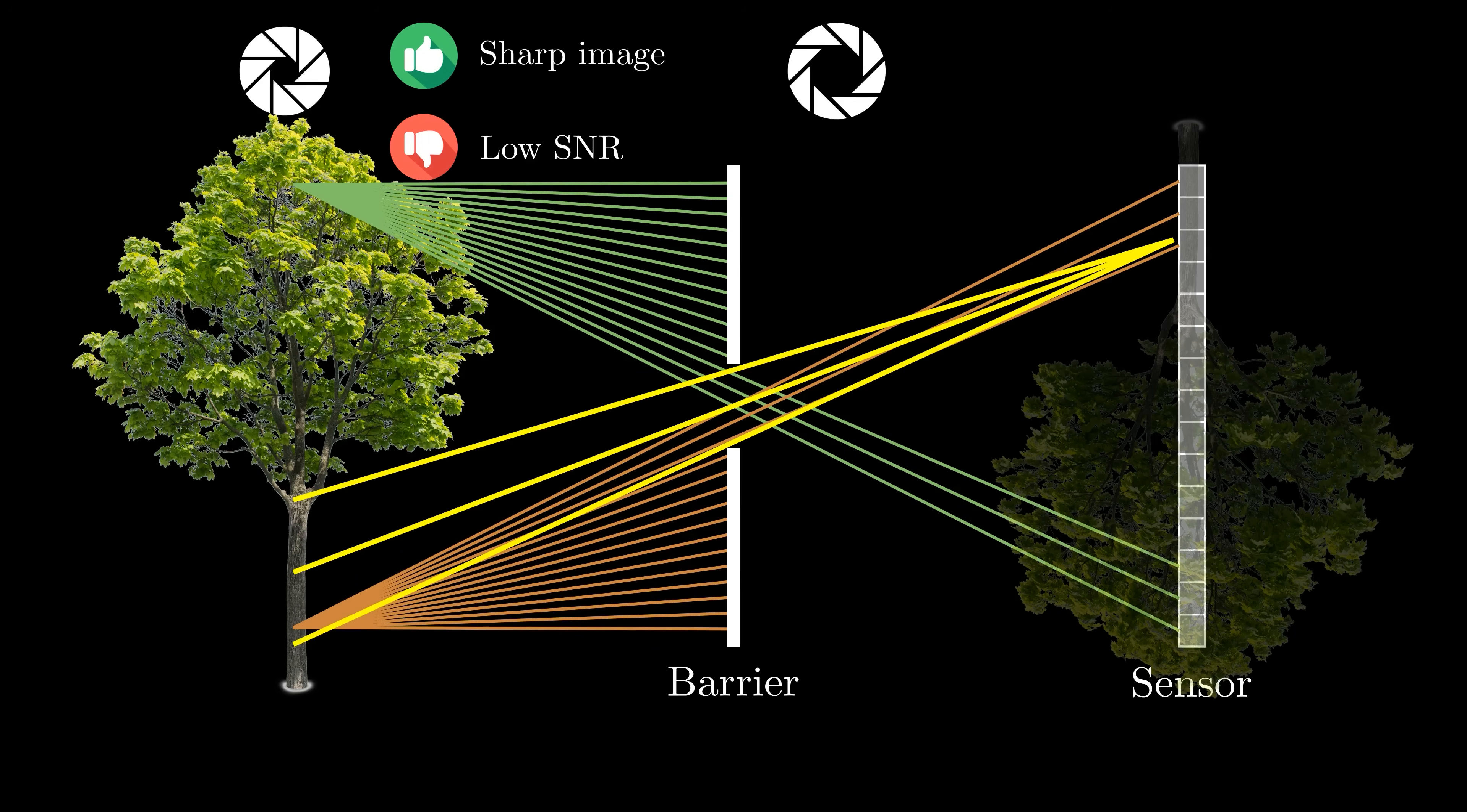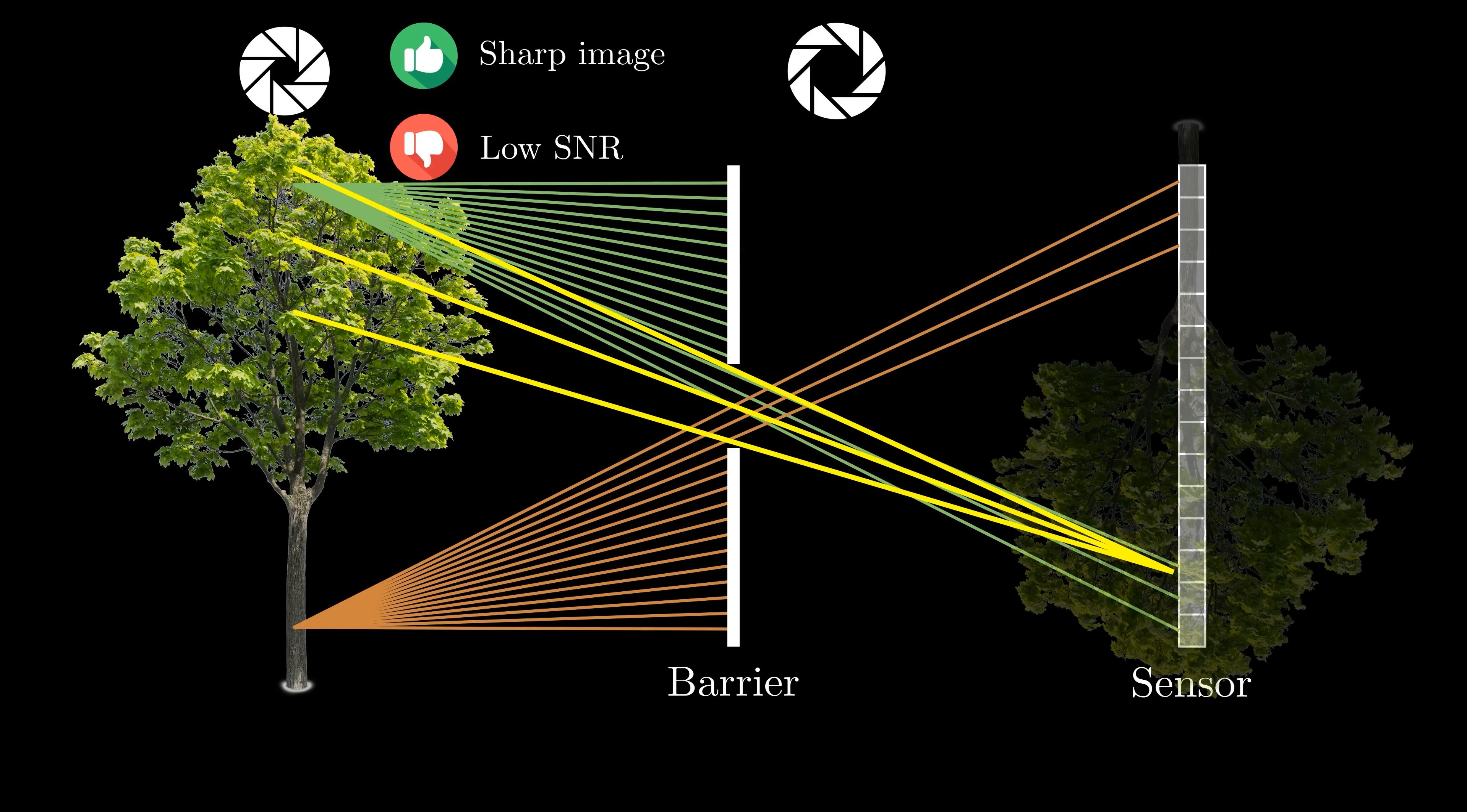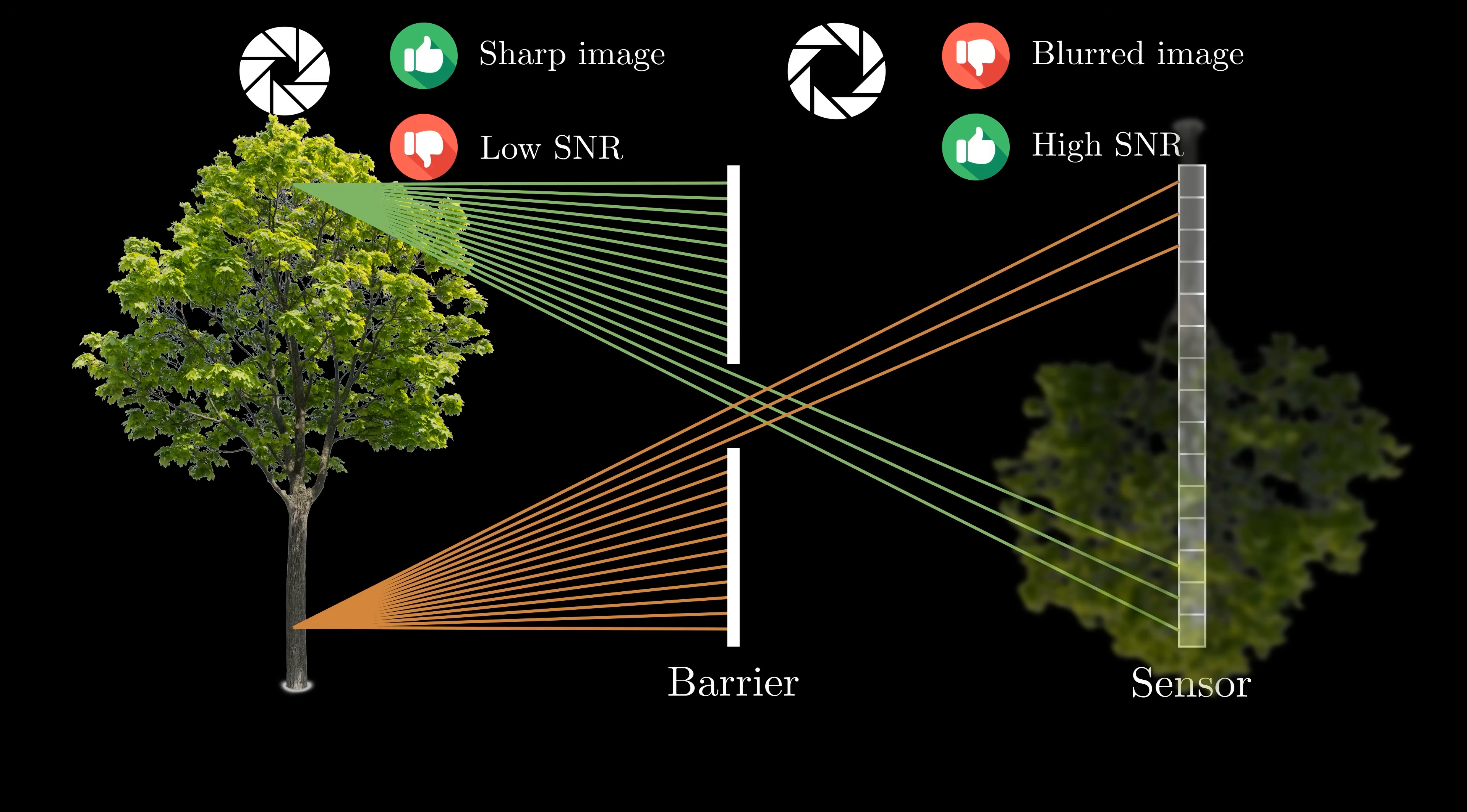In this case, we did improve the signal-to-noise ratio. However, now each pixel gathers light from a broader area, including neighboring points. This leads to a brighter but blurrier image. Is there a way to achieve both a sharp and bright image at the same time?